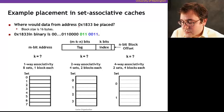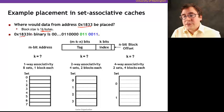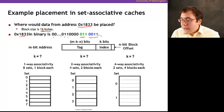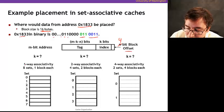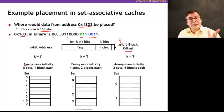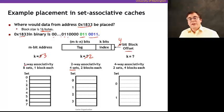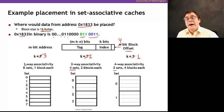Suppose I have address 0x1833, and the block size is 16 bytes. In binary, 0x1833 is something like 0001100000110011. With 16 bytes per block, I need 4 bits for the block offset. How many bits for the index depends on the associativity. With 1-way (direct mapped) and 8 sets, I need 3 bits for the index. With 4 sets (2-way), I need only 2 bits. With 4-way associativity and 2 sets, I need only 1 bit for the index.